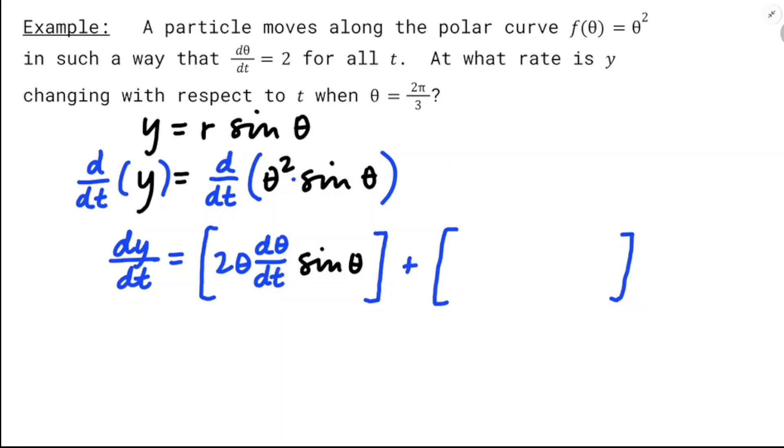I'm going to take the derivative of θ² with respect to t, so that would be 2θ dθ/dt, and I'll leave sine θ the same, and I'll add in, leaving θ² the same, I'll multiply by the derivative of sine θ with respect to t.